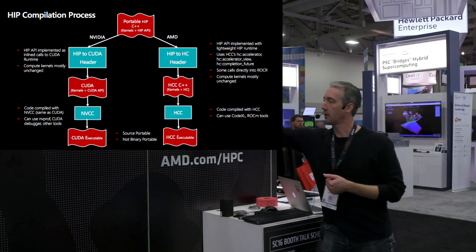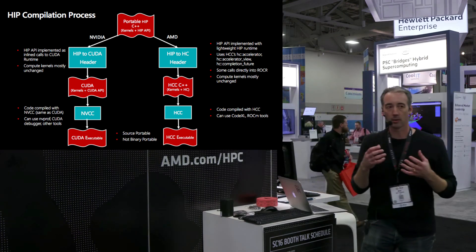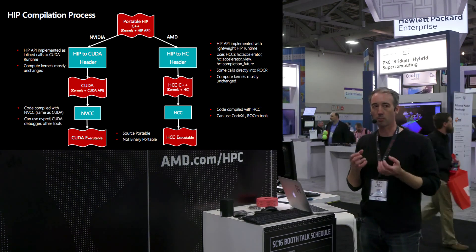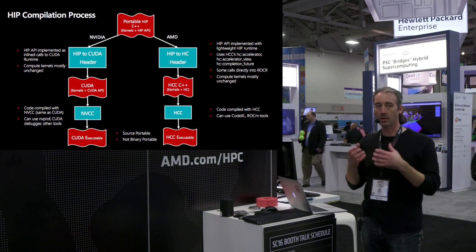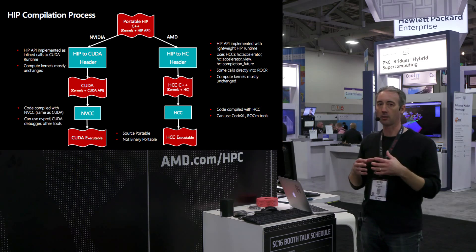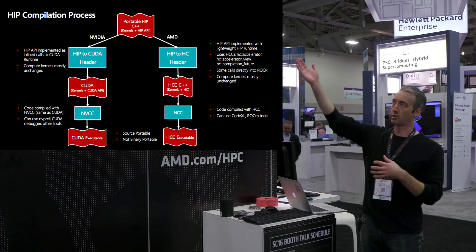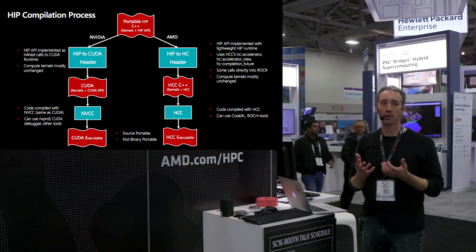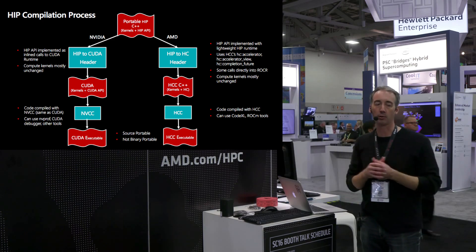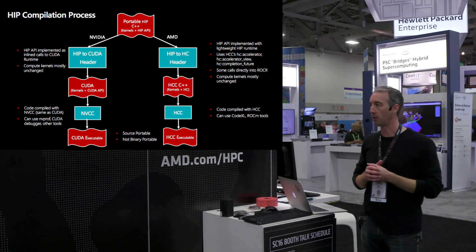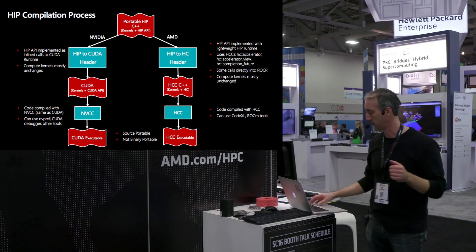An important point: the HIP code is source portable, not binary portable. At the compilation point you make a decision — CUDA path or AMD path. But that's still a very powerful capability: the same source code that runs on both platforms.